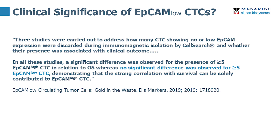A 2019 paper entitled 'EpCAM Low Circulating Tumor Cells: Gold in the Waste' summarized three studies carried out to address how many CTCs showed low or no EpCAM expression that are discarded during CellSearch isolation, and whether the presence of those cells was associated with clinical outcome. In summary, in all of these studies, a significant difference was observed for the presence of greater than five EpCAM high CTCs in relation to overall survival, whereas there was no significant difference for greater than five EpCAM low CTCs. These studies looked at non-small cell lung carcinomas, castrate-resistant prostate cancer, and metastatic breast cancer.